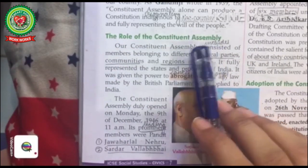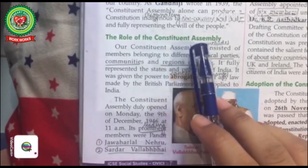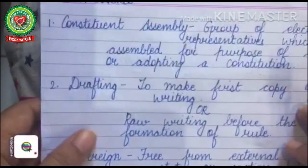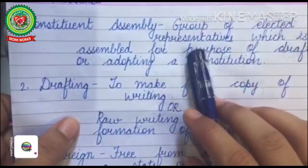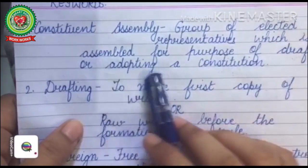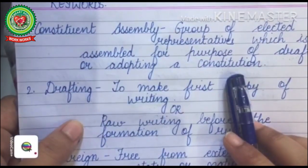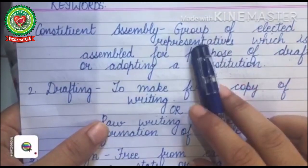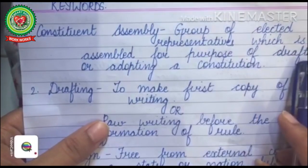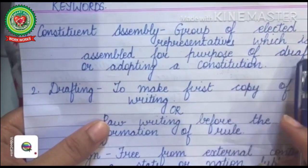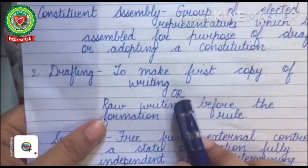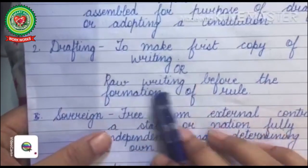Now a new term: Constituent Assembly. Its definition — a Constituent Assembly is a group of elected representatives assembled for the purpose of drafting or adopting a constitution. 'Drafting' means to make the first copy or raw writing before it becomes the final rule.